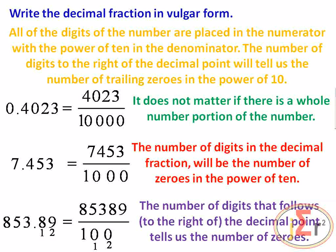Some of the fractions may be reduced after being written in vulgar form, but not all cases require reduction. When writing a decimal fraction in vulgar form, we count the number of digits to the right of the decimal point, and that will be the number of zeros in the power of ten placed in the denominator.